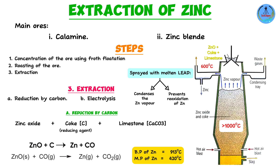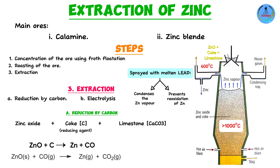Once the zinc has liquefied, we have a mixture of molten zinc and molten lead. This is not a problem because molten lead is denser than molten zinc. The zinc, being lighter, separates and settles above the molten lead. It is then collected — and there we have our molten zinc.